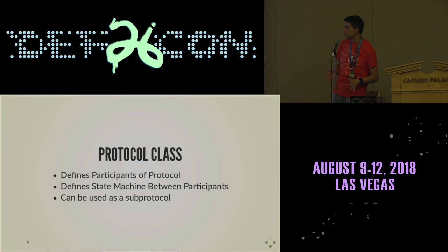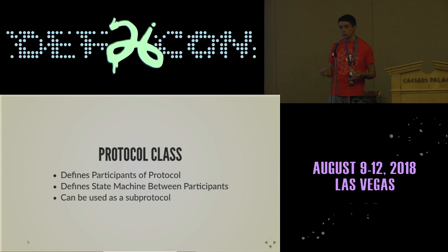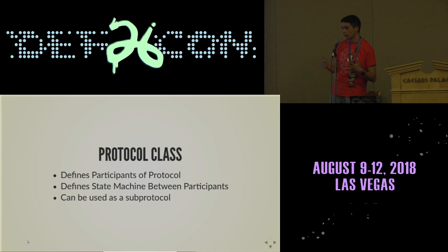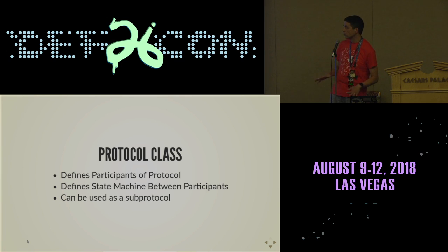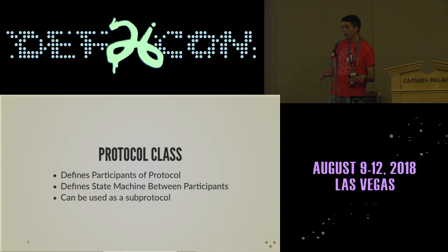I'll talk a little bit about the protocol class. One of the nice things about Charm is that if you have a protocol involving communication between two parties, you can write this in terms of methods that just return values that would be sent back and forth. It maintains a state machine of where you are in the protocol and handles the transport portion — sending and receiving of data. This can also be used as a sub-protocol, so you can have other protocols within your main protocol.